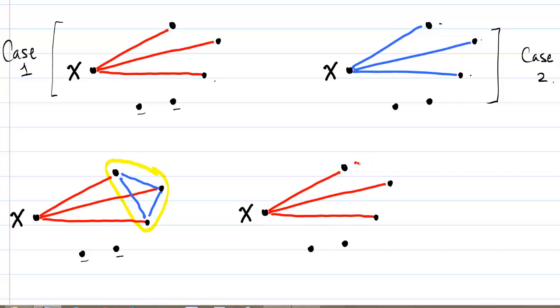Now if it's not the case that these three people are all friends with each other, there has to be two of them who are enemies with each other. And in this case, we also know the theorem holds, because we found three people, person X, and his two enemies who are enemies with each other, and they form a group of three who are all mutual enemies.